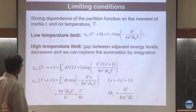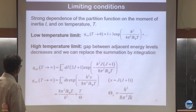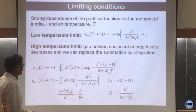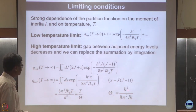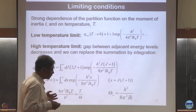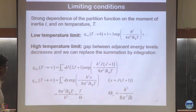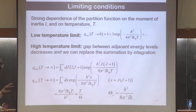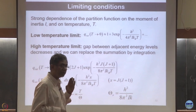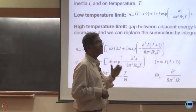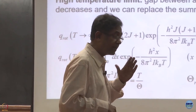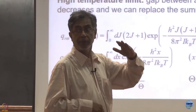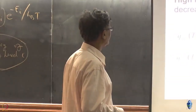In the high-temperature limit, the rotational partition function is T/θ_r, where θ_r = H²/8π²Ik is defined as the rotational temperature. This quantity has dimensions of inverse temperature. The rotational temperature tells you: below this temperature use the low-temperature limit; above it, treat as high temperature. Similarly, θ_vib is a crossover temperature for vibration.